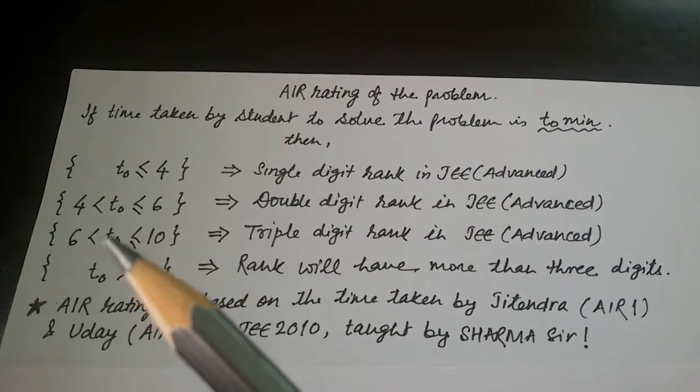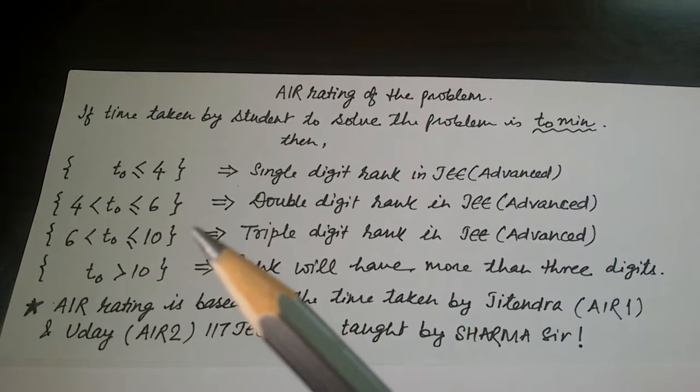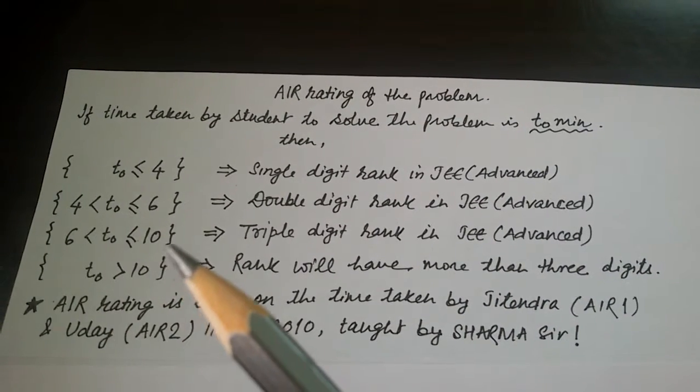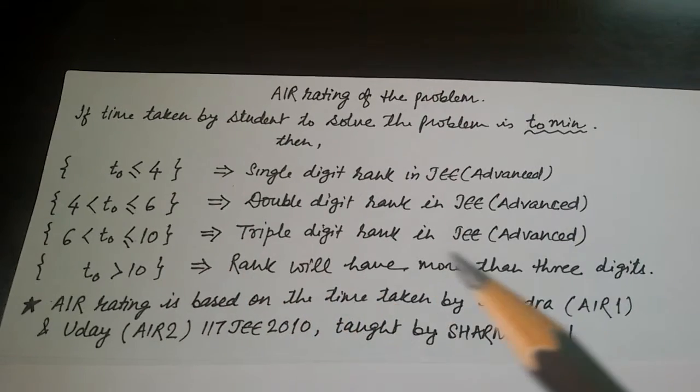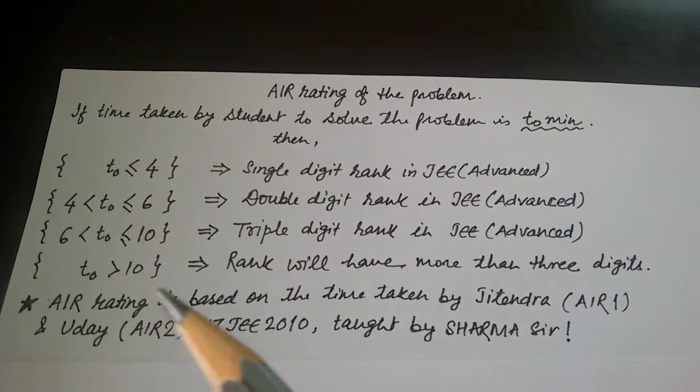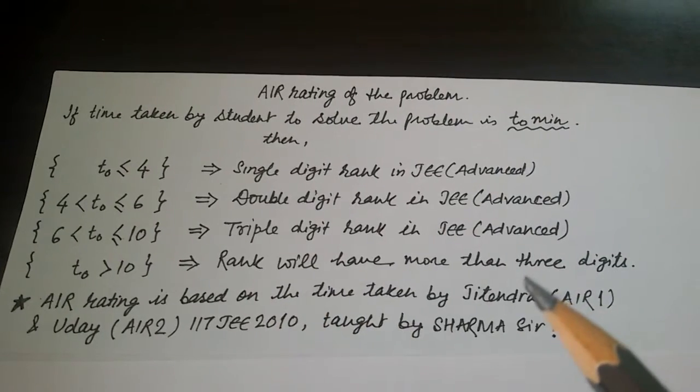t0 greater than 4 minutes less than or equal to 6 minutes, double digit rank in JEE Advanced. t0 greater than 6 minutes less than or equal to 10 minutes, triple digit rank in JEE Advanced. t0 greater than 10 minutes, rank will have more than 3 digits in JEE Advanced.